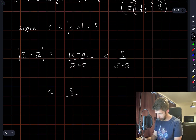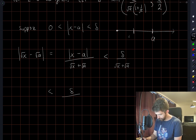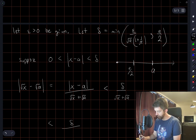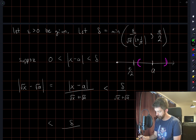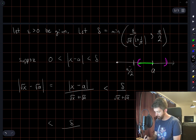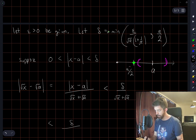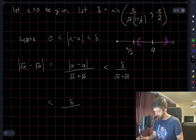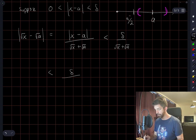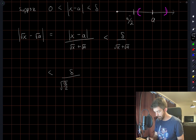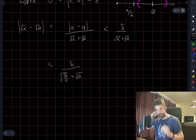Maybe it'll help to draw a number line here again. There's a, there's a over two. I have some value of delta which defines an interval around a symmetrically. So x has to be within this interval. This interval will never contain a over two because delta is less than or equal to a over two. So we know that x is greater than a over two. If I replace x with a over two, the denominator gets smaller, which means the entire expression gets bigger.